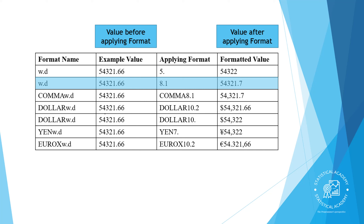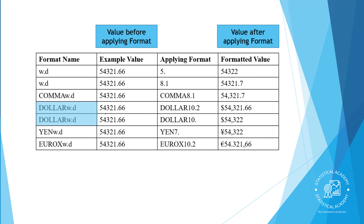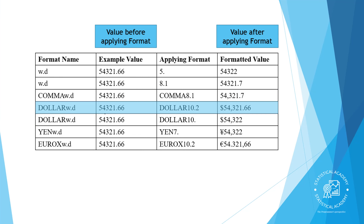It's fine that the format width is eight even though the digits and the decimal point fill only seven positions. The COMMA format inserts a comma; specifying a width of 8.1 rounds a value to the nearest tenth. The DOLLAR format inserts a dollar sign in the displayed value. Keep in mind that the width must accommodate the total width of the displayed value, including the dollar sign, commas, decimal point, and decimal places.